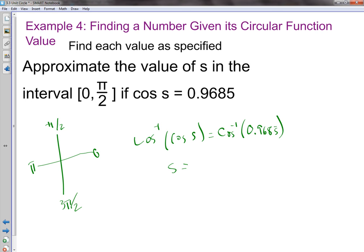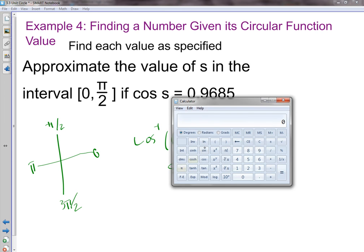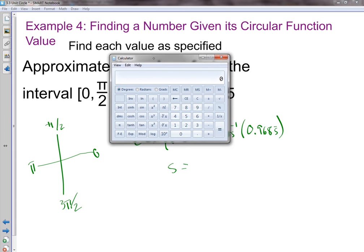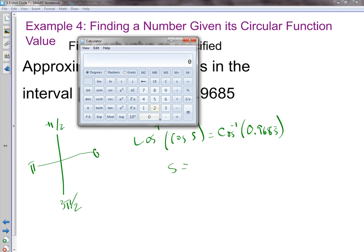Plug that into your calculator, and you get... I'll use a cheap little calculator here. If we want to take and plug in 0.9685, and make sure we're in radians. We're going to take the inverse cosine, and it tells us it's 0.2561.